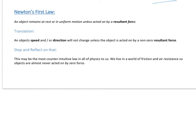Newton's first law is that an object remains at rest — zero meters per second, not moving — or in uniform motion, so a constant velocity, unless acted on by a resultant force. Things can't change their motion, they can't change their velocity, without being acted on by a resultant force. This is often considered Newton's most counterintuitive law.